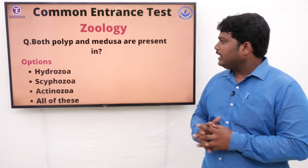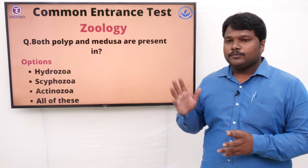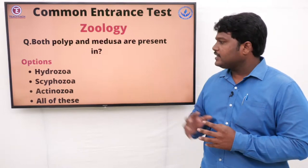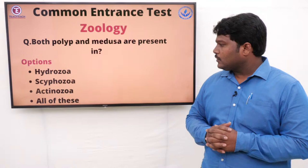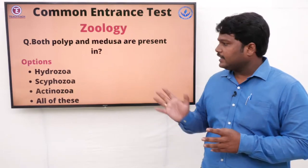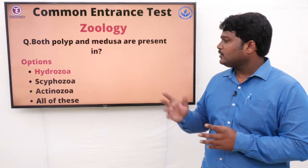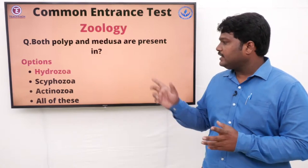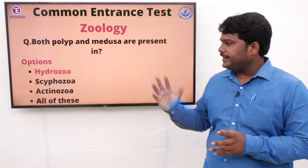Question 19: Both Polyp and Medusa are present in. Options: A) Hydrozoa, B) Scyphozoa, C) Actinozoa, D) All of these. The right answer is Hydrozoa. Both Polyp and Medusa are present in Hydrozoa.